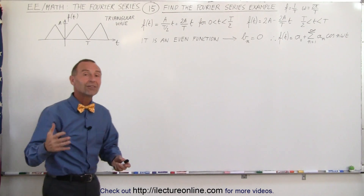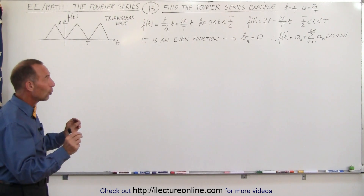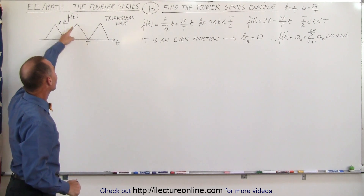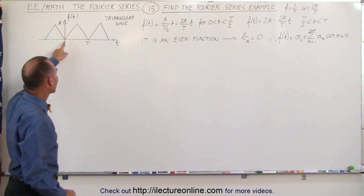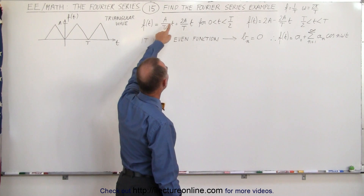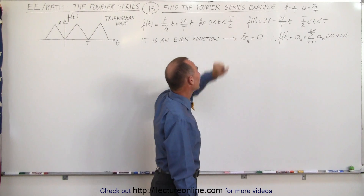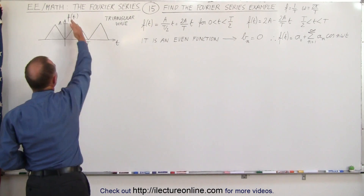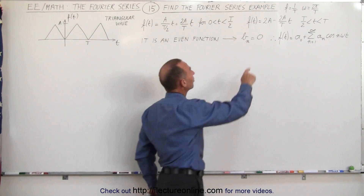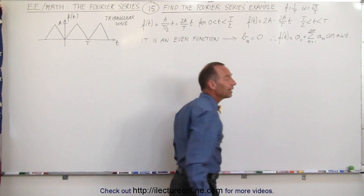That also means we only have to find the a_0 and the a_n coefficients. Because it's an even function, we can make that even a little bit easier. If we want to graph the function between zero and the first period — zero and one T — notice for this part the function is equal to 2A over T times t for values of t between zero and a half period. Before the next half period it has a negative slope and a y-intercept of 2A, so the function is defined as 2A minus 2A over T times t for the second half of the period.